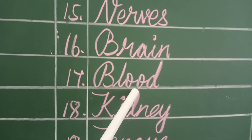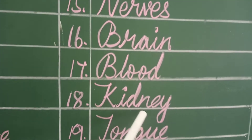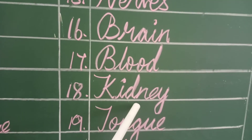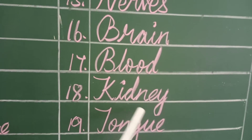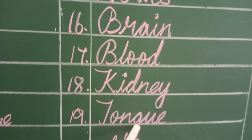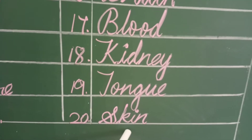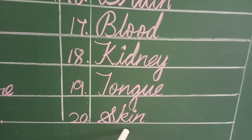Blood — ratam. Kidney — siruniragam. Tongue — narambukal. Skin — thol.